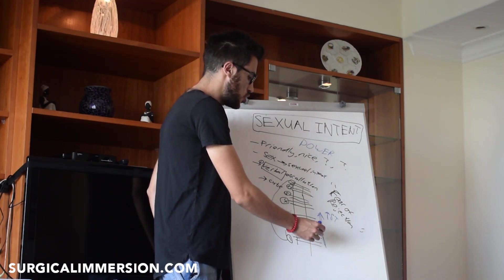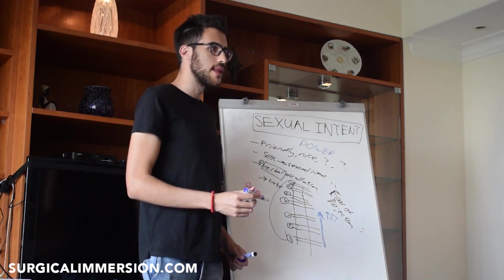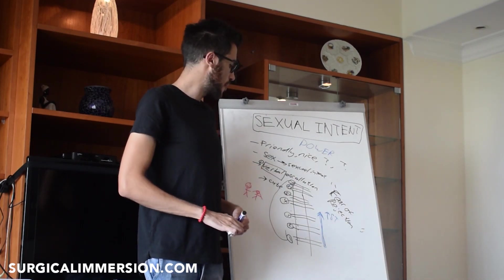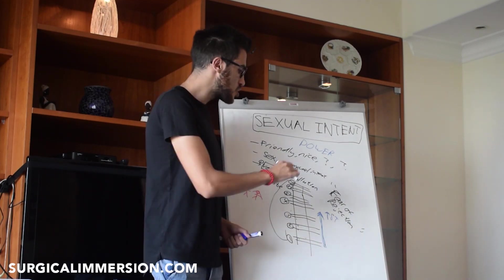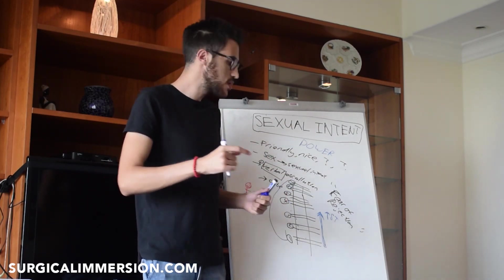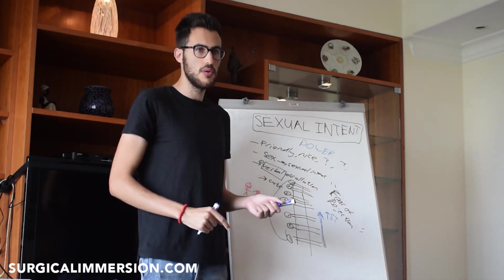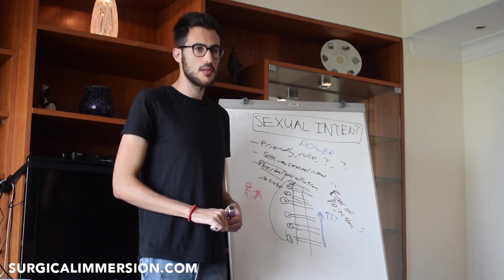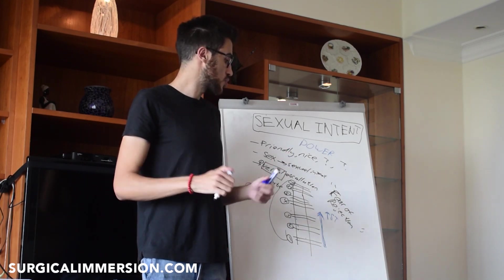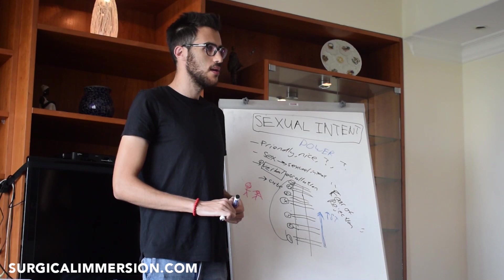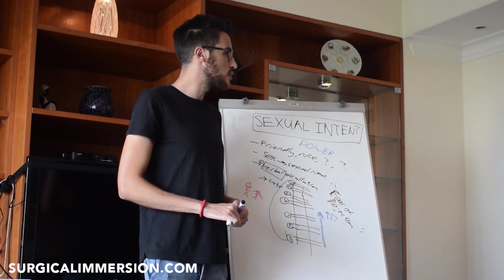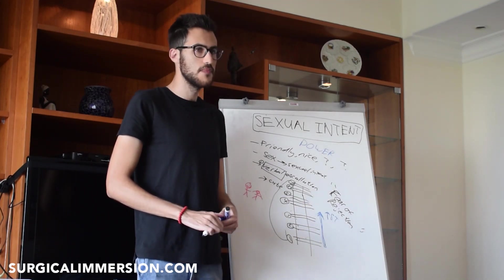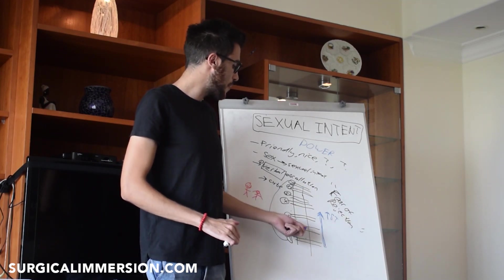You want to let the sexual tension build just enough that it impacts the interaction before you release it. Don't say 'you have such kissable lips — but you can't kiss me' in the same breath, because you destroy the tension before it simmers. Let it simmer, let her feel it, then release before she does. If you release too fast, it's as good as not doing it — the point is to create sexual tension, not just stay safe.